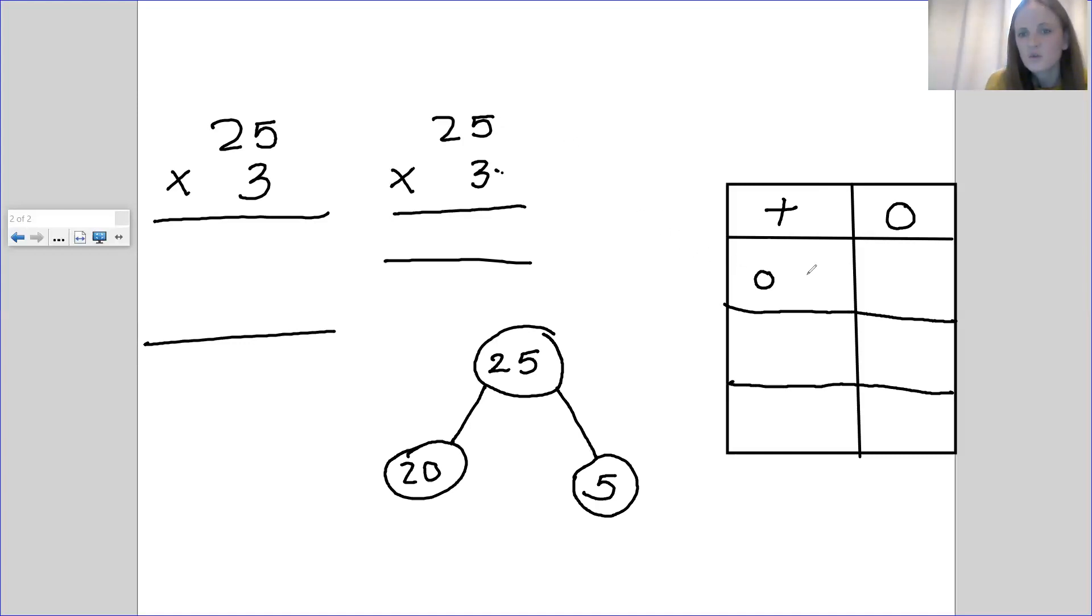So I'm going to do a 20. And I'm going to do 1, 2, 3, 4, 5. That's one group. 20, 1, 2, 3, 4, 5. Last one, 20, 1, 2... sorry, that's 20. And then our 5: 1, 2, 3, 4, 5. So we've got three groups of 25.